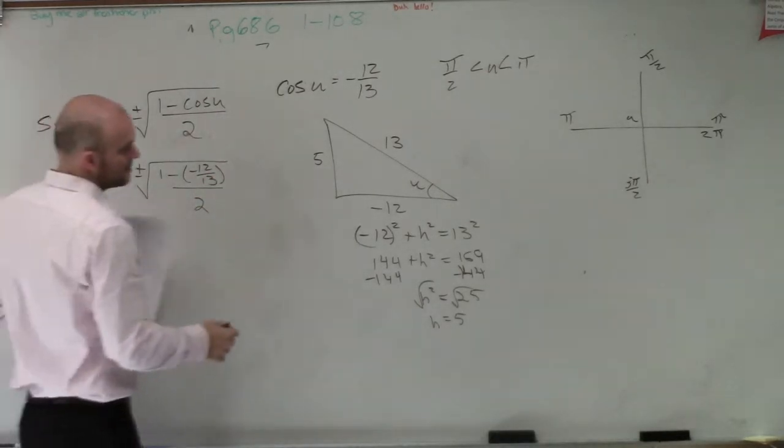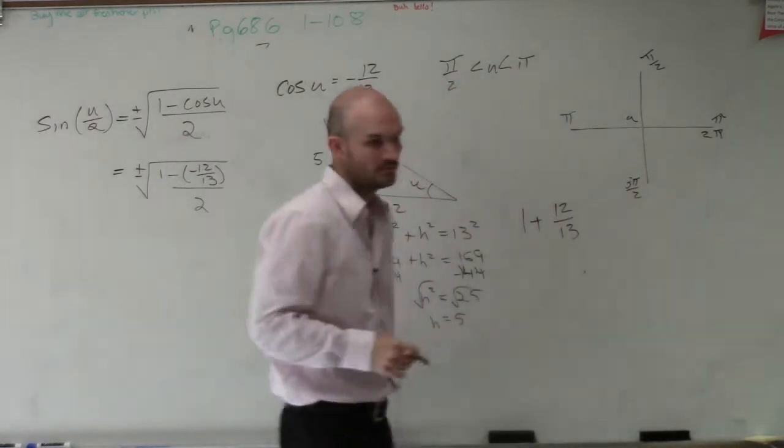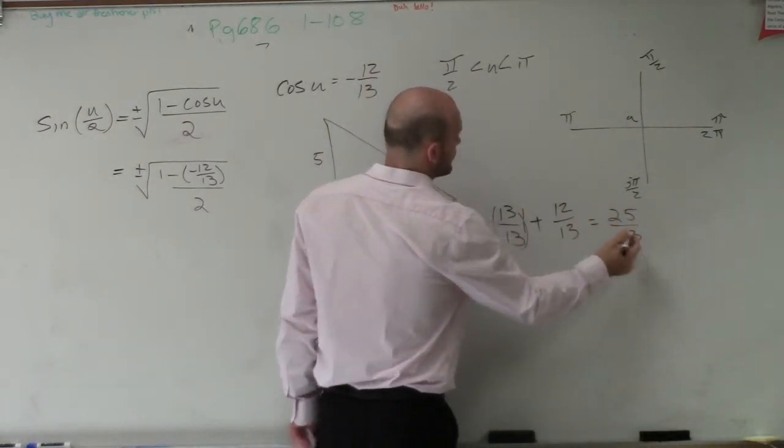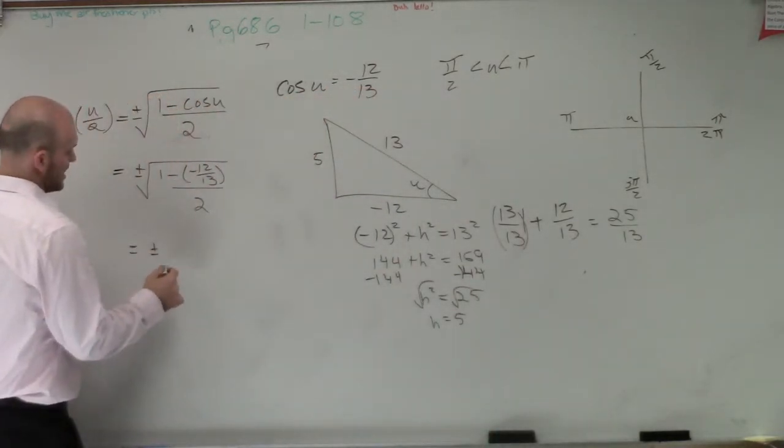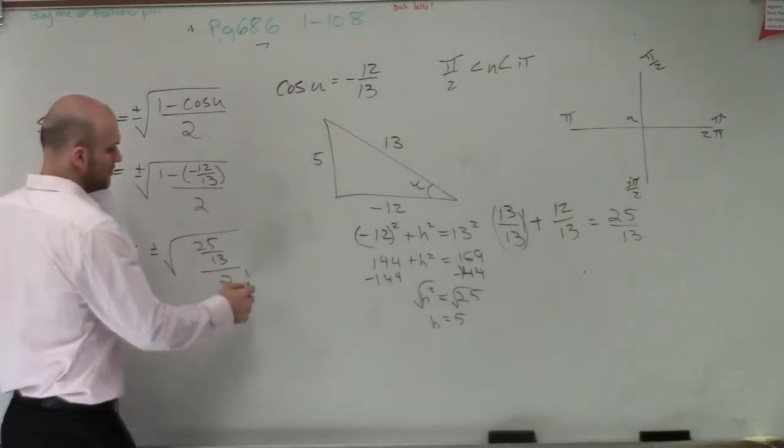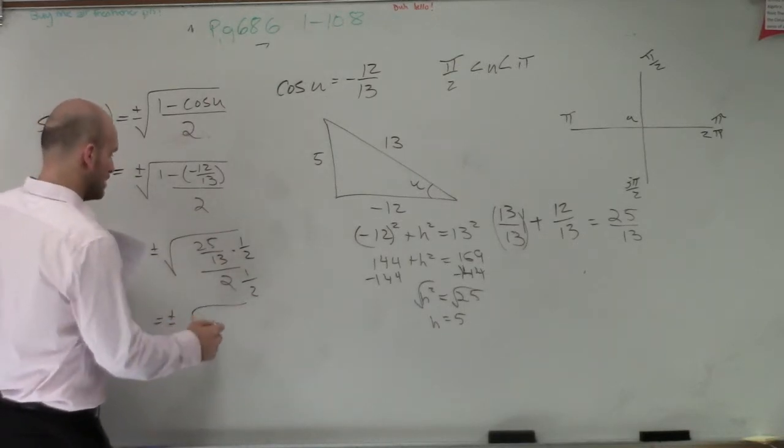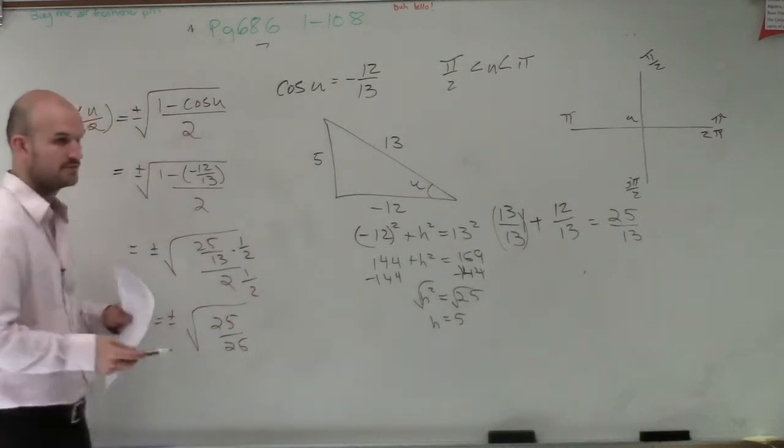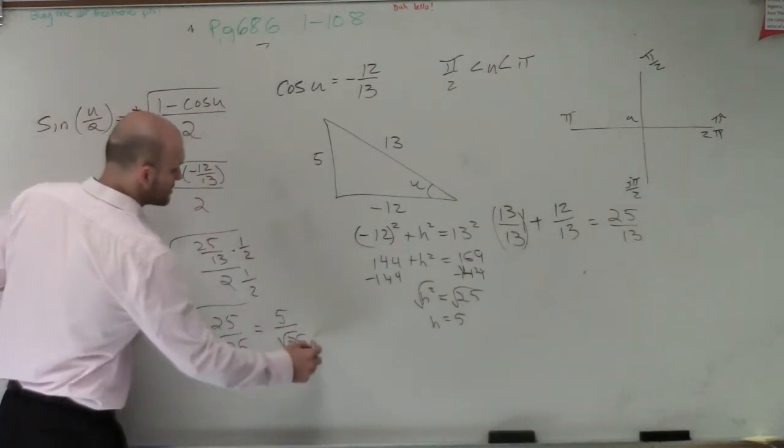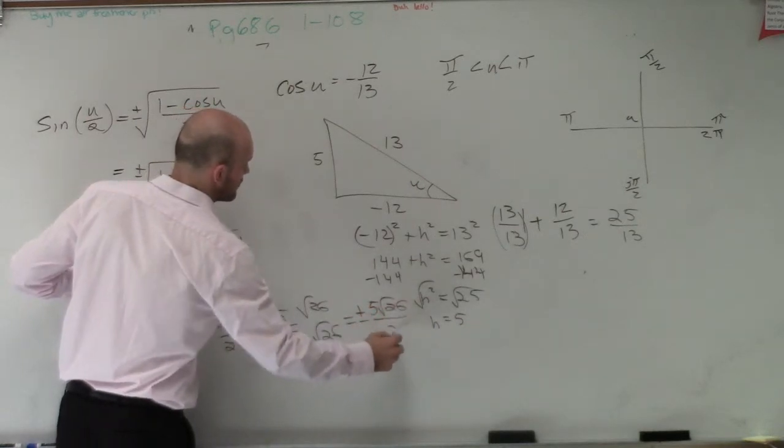So let's subtract our fraction here. So it turns into 1 plus 12 over 13. So then you need to add 13 over 13. Therefore, you end up getting 25 over 13. So this equals plus or minus the square root of 25 over 13 divided by 2. Now to get our 2 off our denominator, I'll multiply by 1/2. Therefore, I now have plus or minus the square root of 25 over 26. Now, I can simplify the square root of 25 to 5 over the square root of 26. And then I can rationalize the denominator. So my final answer is plus or minus 5√26 over 26.